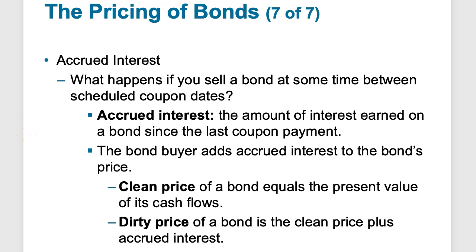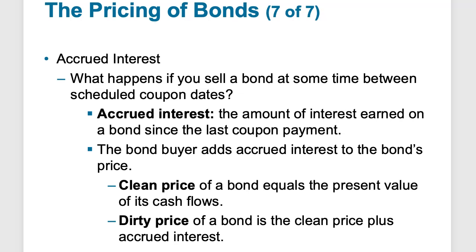Accrued interest: when you sell a bond at some point in time, there is accrued interest you've accumulated but that hasn't been paid out yet. A bond buyer will add that accrued interest to the bond's price. The clean price of a bond is just the present value of the cash flows, while the dirty price is the clean price plus any accrued interest. If you held a bond for five months and in the sixth month it pays interest, and you sell after five months, you should receive five-sixths of the interest upon that sale.